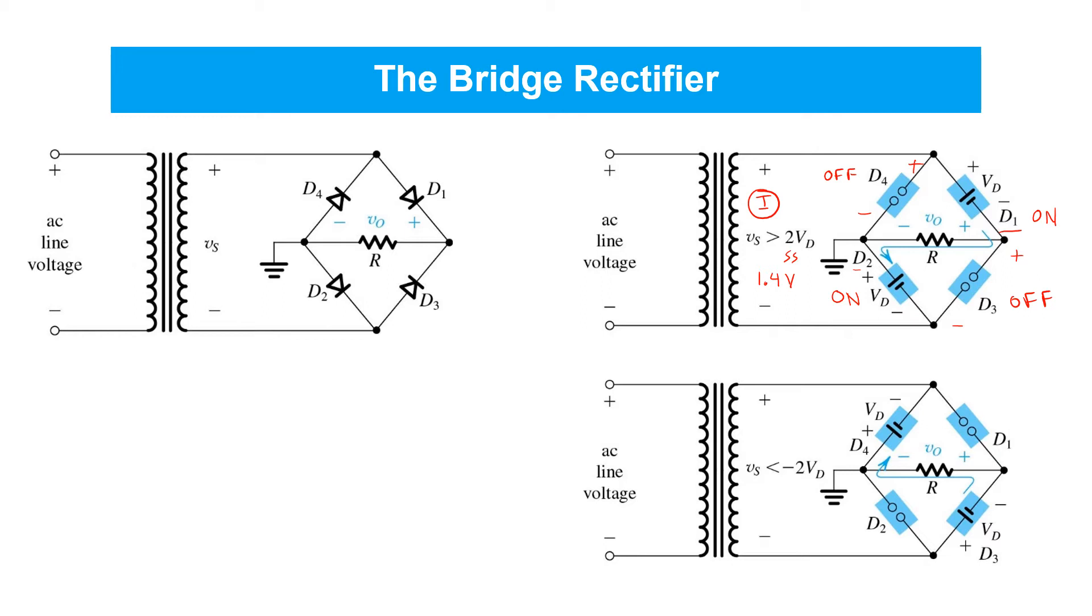The result is shown here in the top right, where current can flow from the secondary winding through diode D1, and then through the resistor generating a positive output voltage at VO, and then finally through diode D2, and back into the secondary winding here.